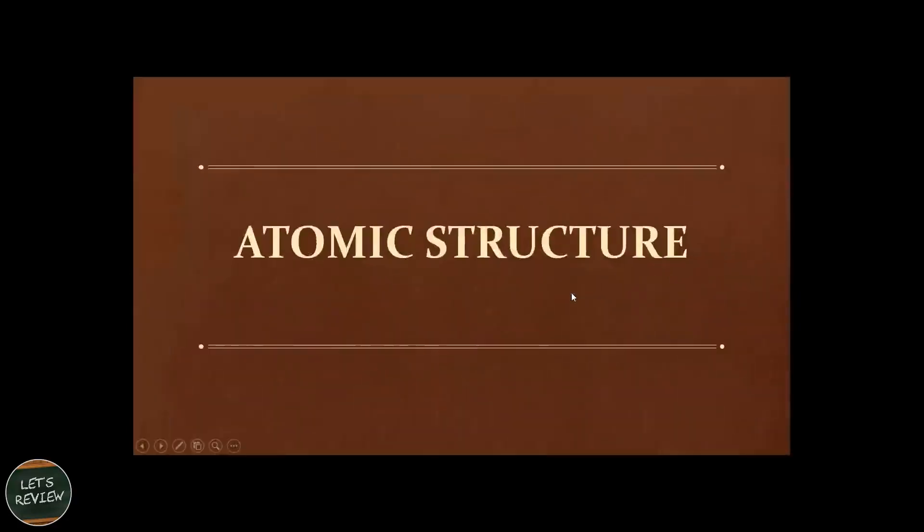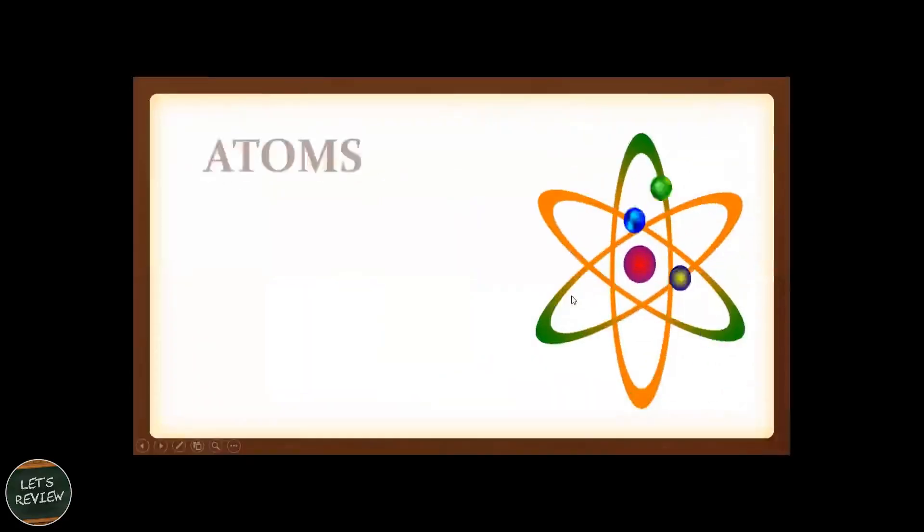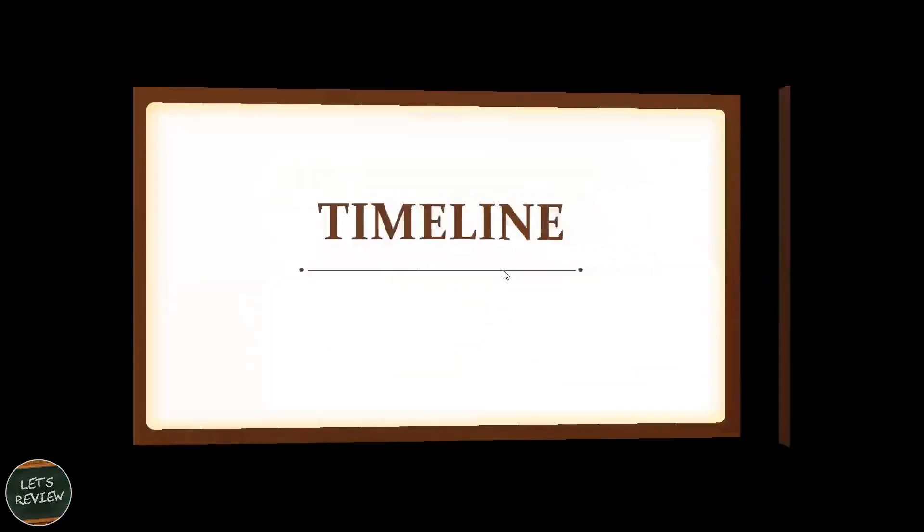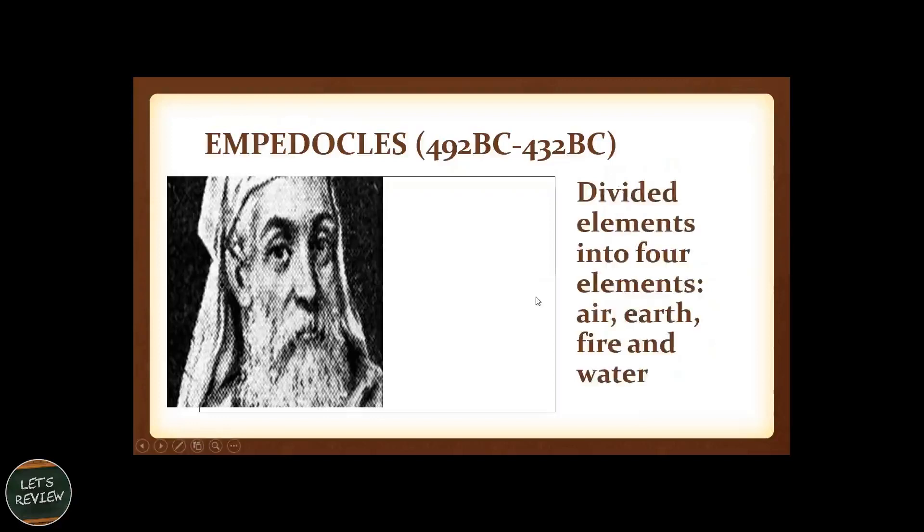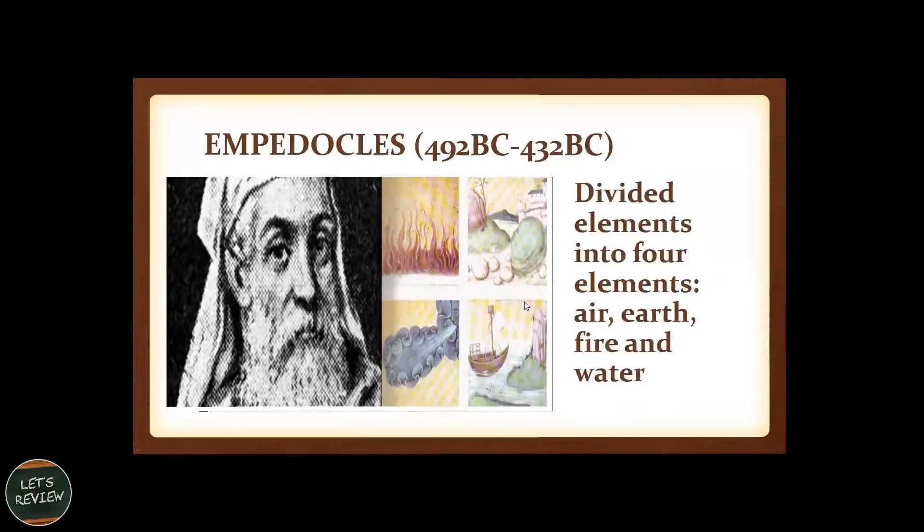Now, let's have a little bit of atomic structure history. The building blocks of matter that make up everything that exists in our earth, or in our world, is atoms. Let's start. 492 BC to 432 BC was Empedocles. He divided elements into four: air, earth, fire, and water.